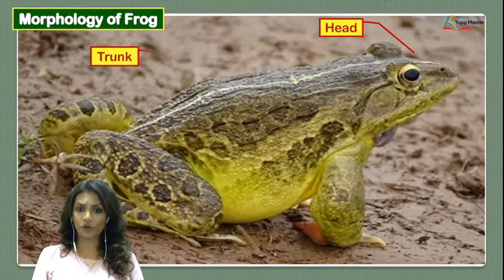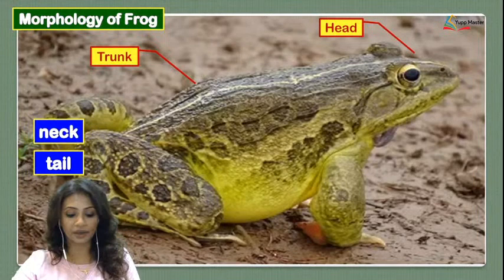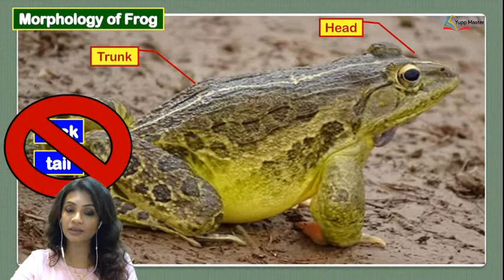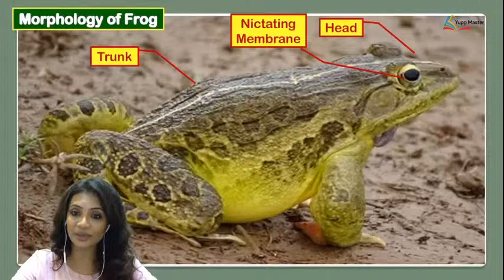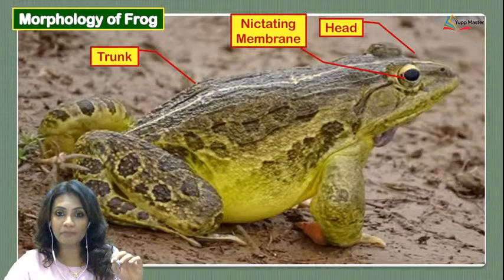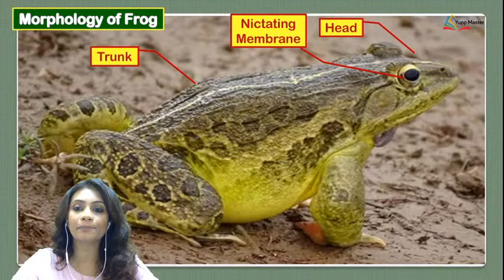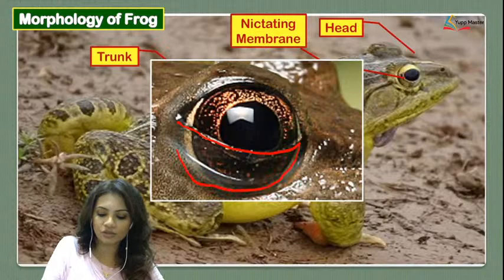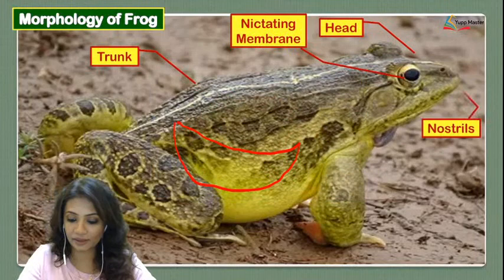Looking at other external features of the frog, there is a head region and a trunk region, but there is absolutely no neck and no tail present. On the eyes there is a membrane that helps in covering and protecting the eye, called the nictating membrane. You can see the nictating membrane in the diagram here.